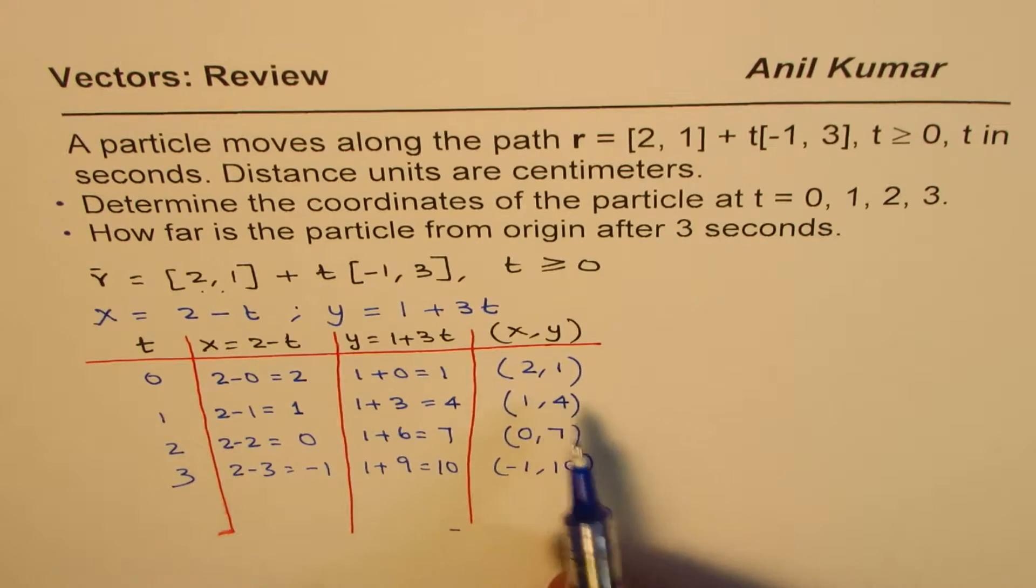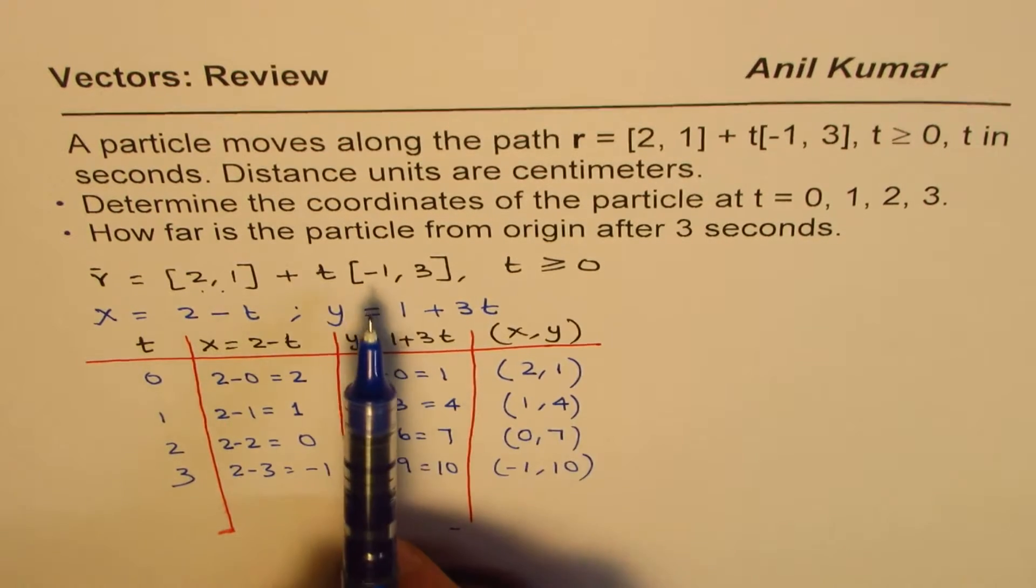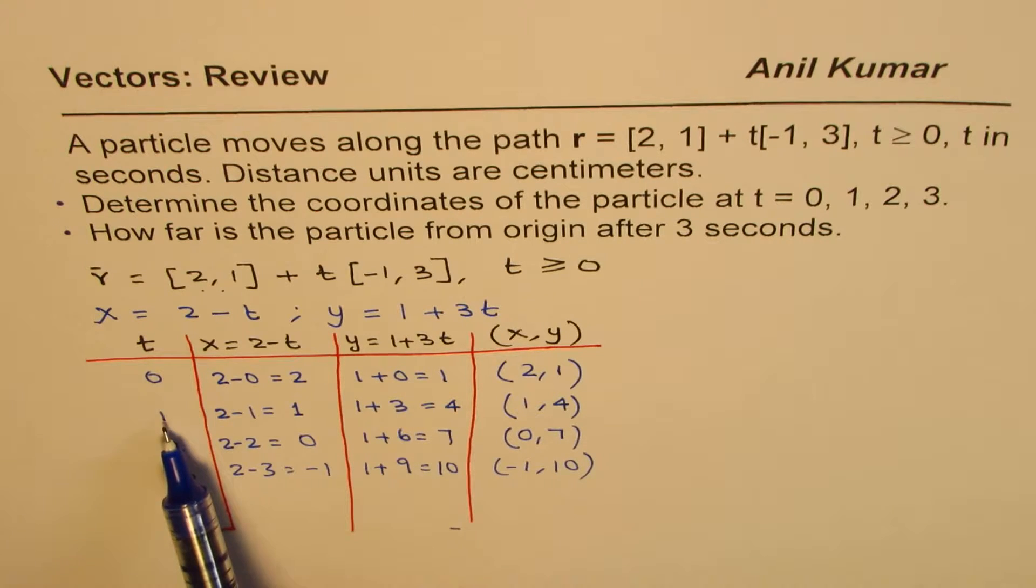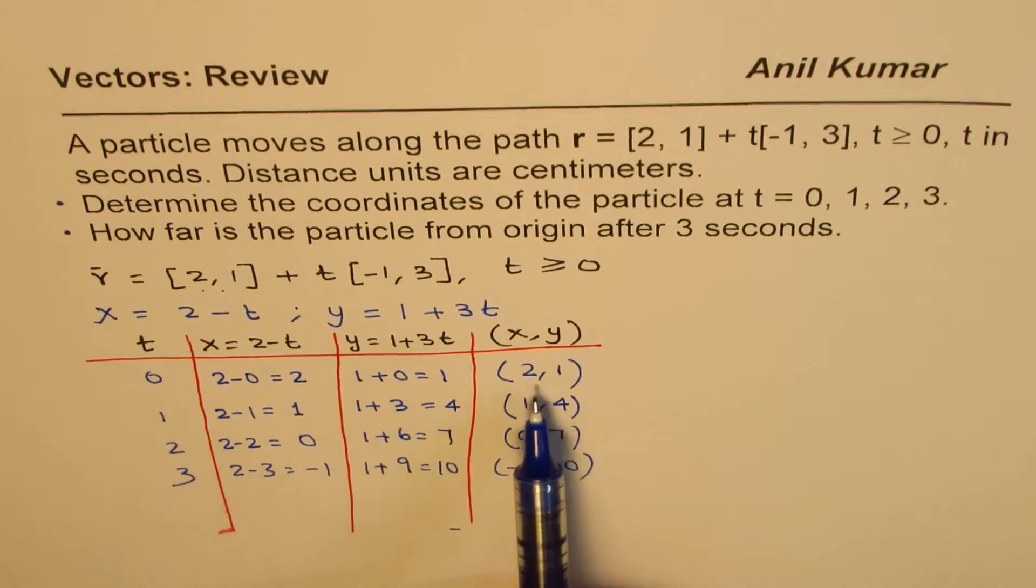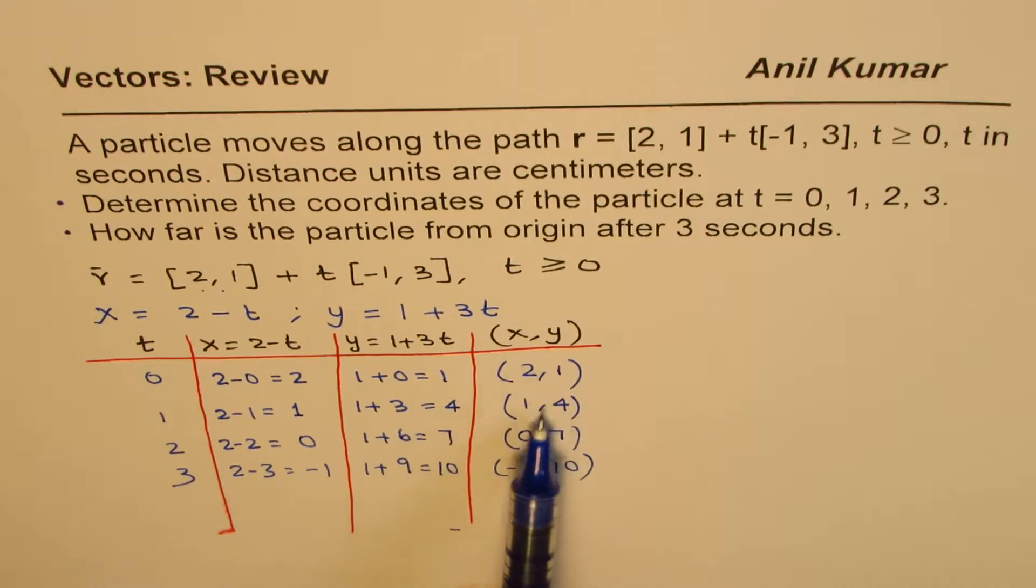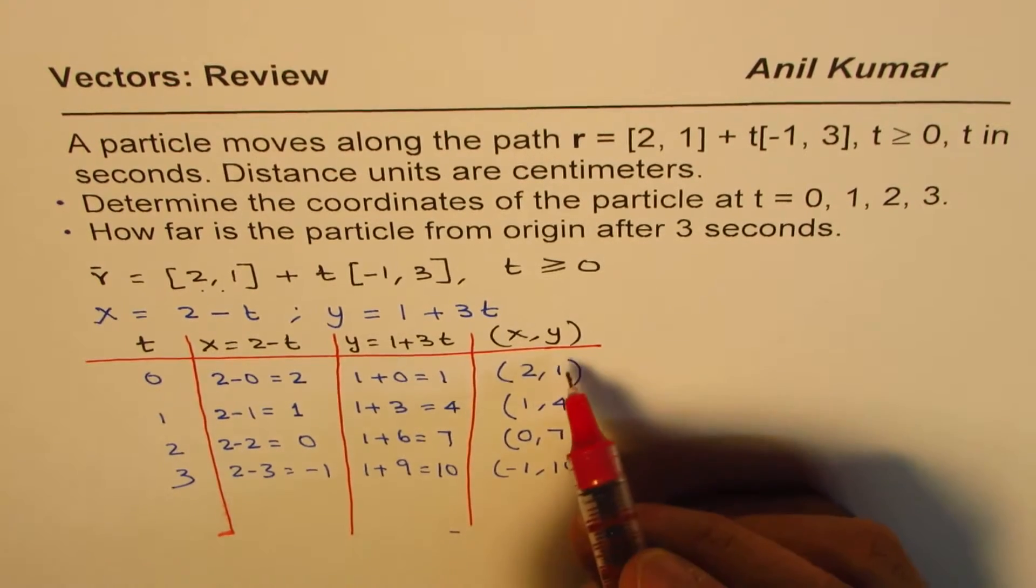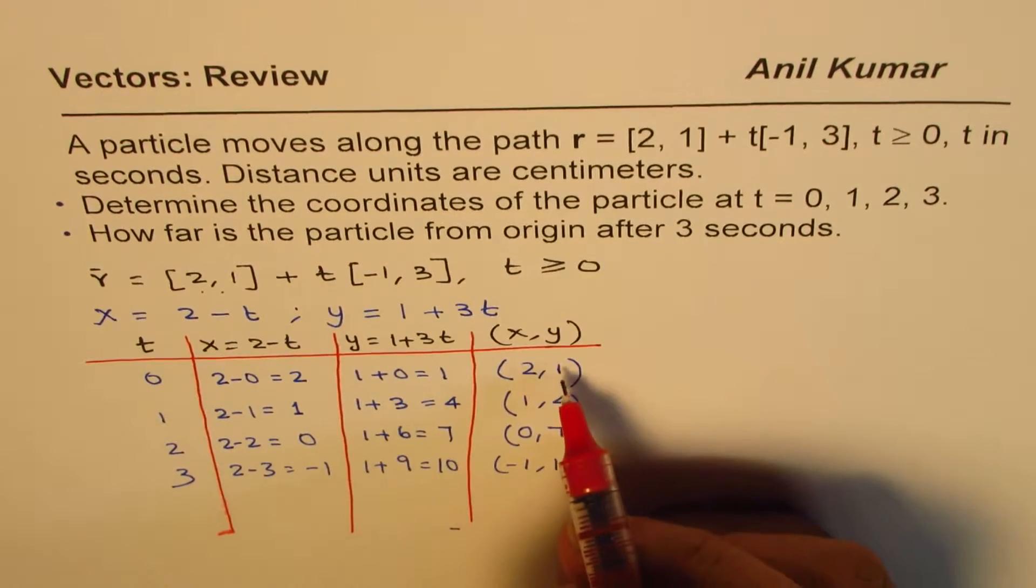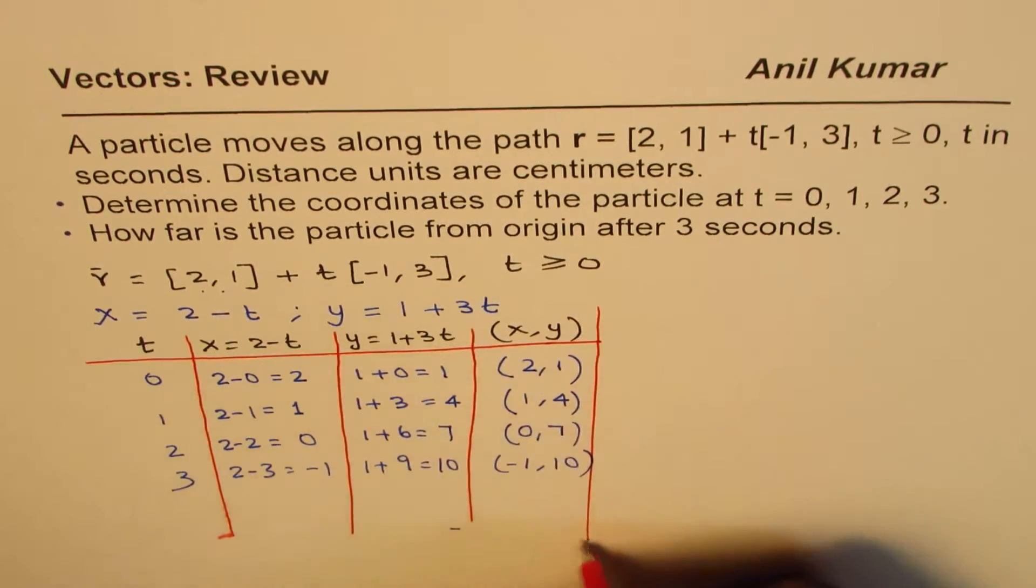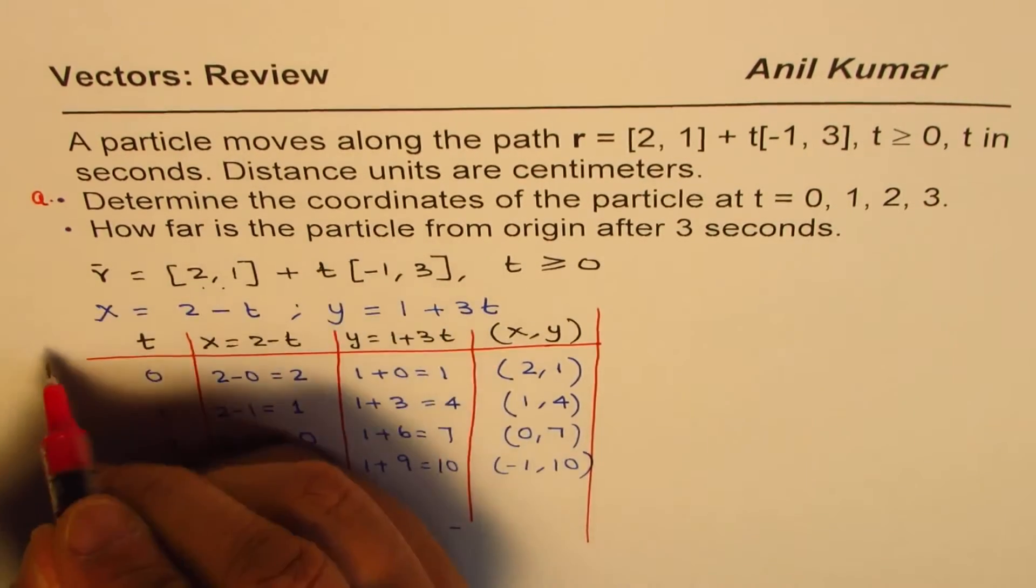Now you can observe here that as we go a step ahead with t, the coordinate values change by (-1,3). That's what we see. And this is a constant slope. So that is the direction in which the particle is moving. So these are the coordinate values. So we've done the part a. So that becomes actually a good way of representing the information.